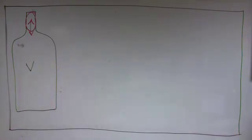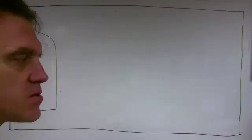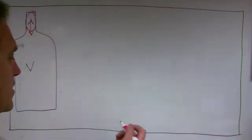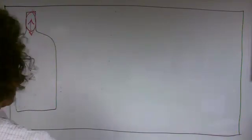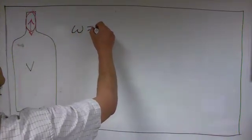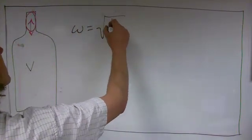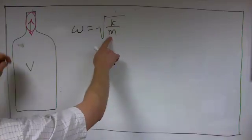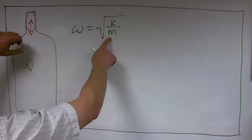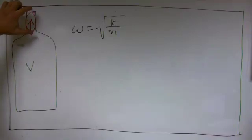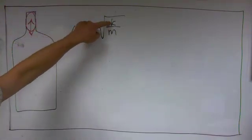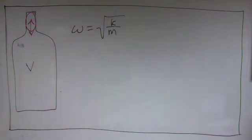We can actually predict the frequency of the oscillation and thus the frequency of the tone that's produced. A mass on a spring oscillates with an angular frequency ω = √(k/m). If we can find the effective spring constant of the air in the main part of the bottle, we can predict the frequency.